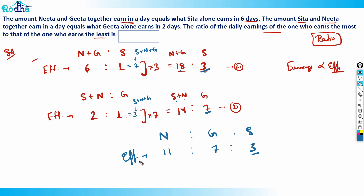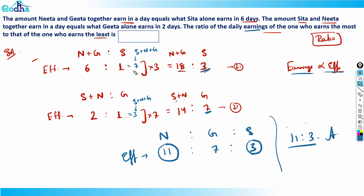The question asks for the ratio of daily earnings of the one who earns the most to the one who earns the least. Since earnings are directly proportional to efficiency, Nita earns the most (efficiency 11) and Sita earns the least (efficiency 3). So the answer is 11 : 3. That's how we solve this question smartly. Thank you!